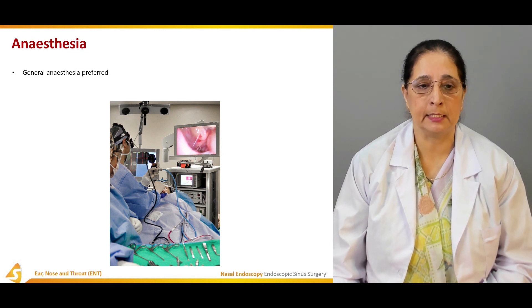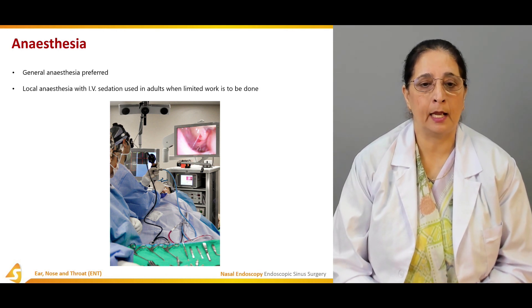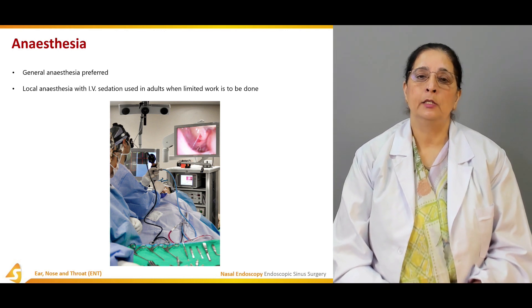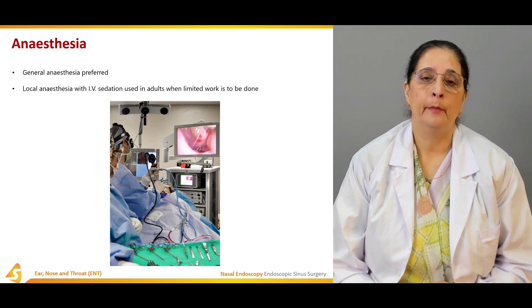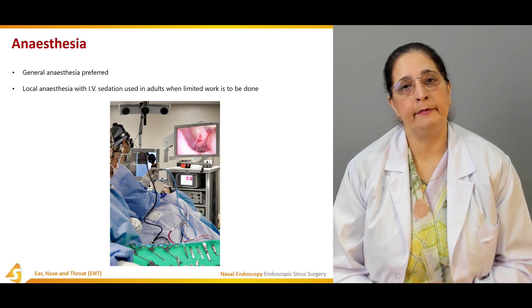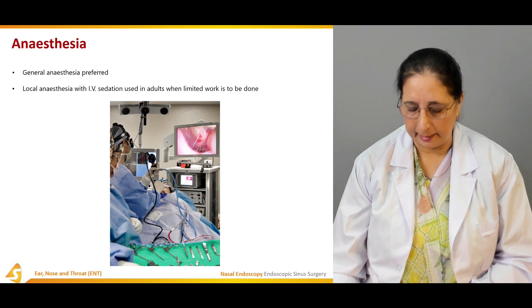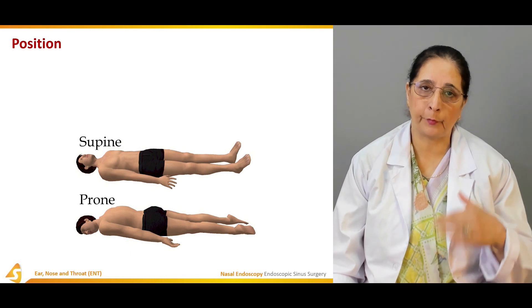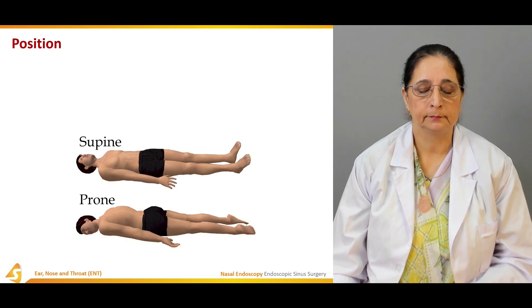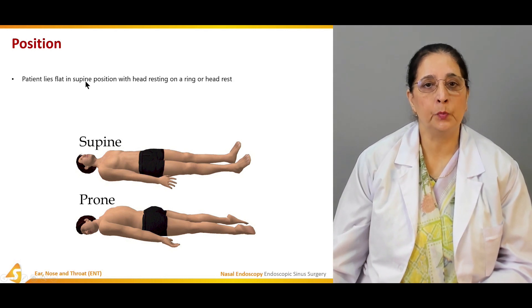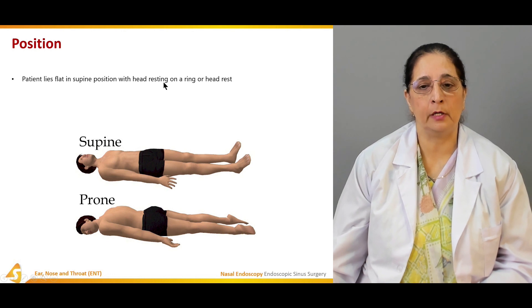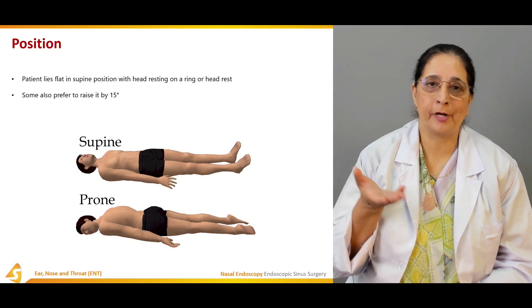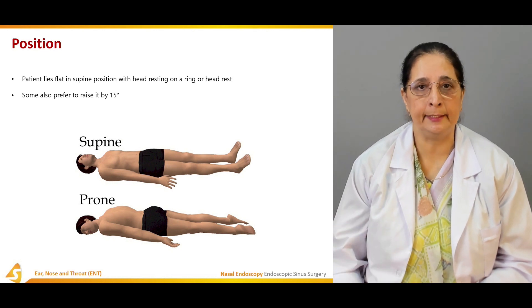General anesthesia is preferred for this technique. Local anesthesia with IV sedation can be used in adults when only limited work is to be done. Regarding patient positioning, the patient lies flat in the supine position — face up — with the head resting on a ring or headrest. Some surgeons also prefer to raise the head to about 15 degrees slightly elevated.